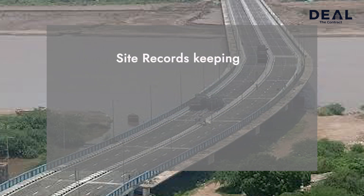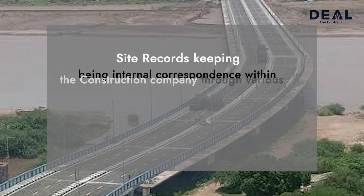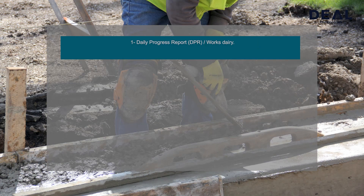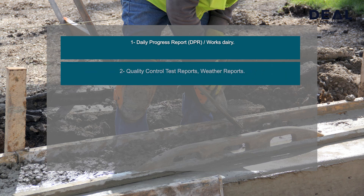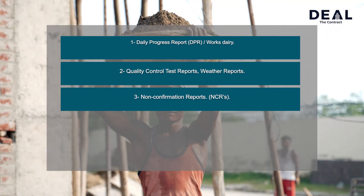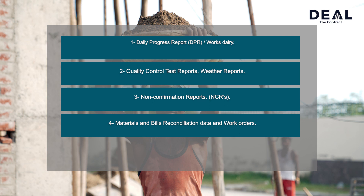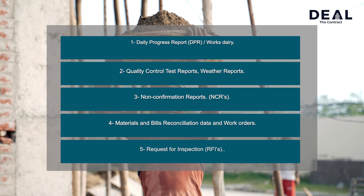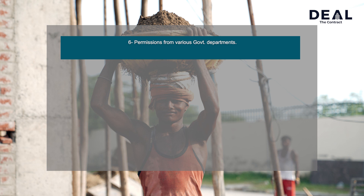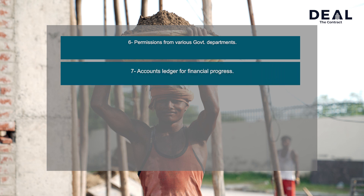Site records keeping, being internal correspondence within the construction company, is managed through various key search words like: daily progress reports (DPR) or works diary; quality control, test reports, weather reports, non-conformance reports (NCRs); materials and bill cancellation data and work orders; requests for inspection (RFIs); permissions from various government departments; and accounts ledger for financial progress.